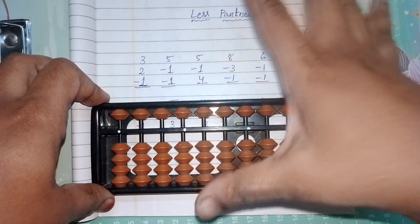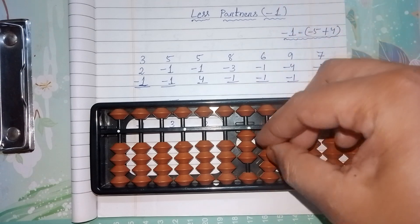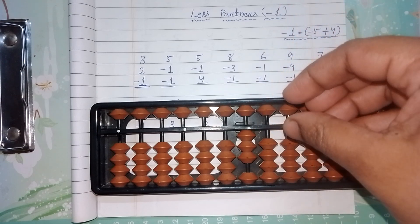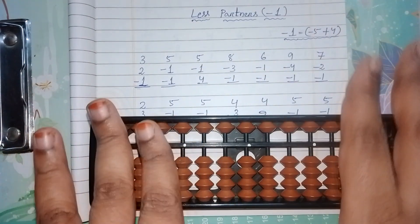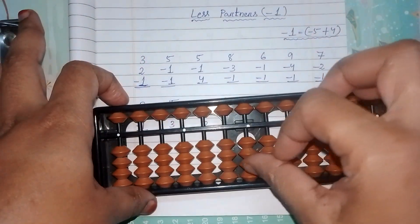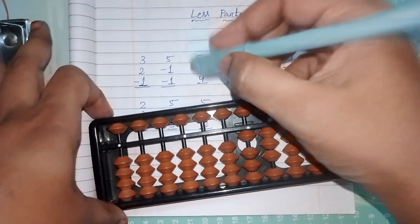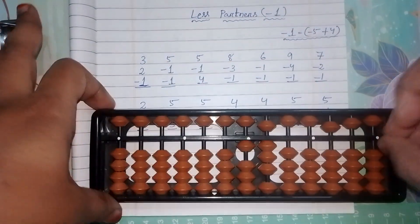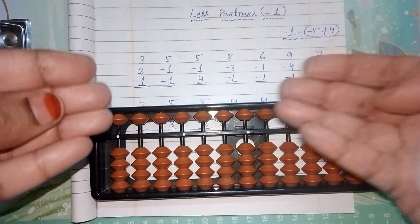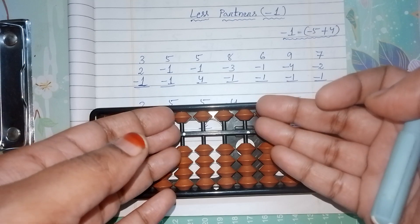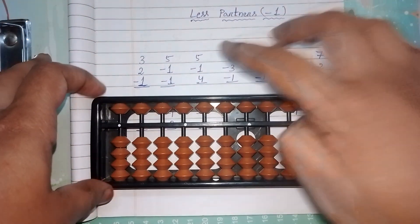Subtract one with the index finger. The answer is three. Set zero, then write the answer. I always tell my students: remember the answer first in your mind, then set zero, then write the answer. This also increases your memory power. If you keep the abacus as is while writing, your finger might accidentally touch a bead and you'll forget the answer. So always: remember → set zero → write.